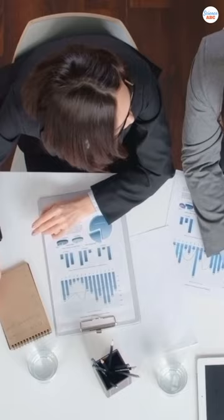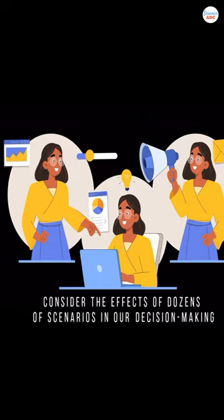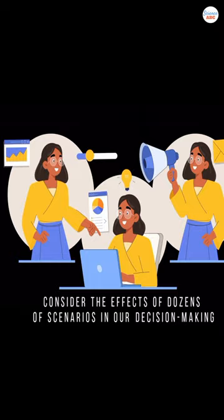We have the capacity to learn rapidly, a trait shared by other species, but our skills are far superior. We can formulate vast narratives, consider the effects of dozens of scenarios in our decision-making, and analyze our situations well enough to draw from previous experience and avoid earlier mistakes.